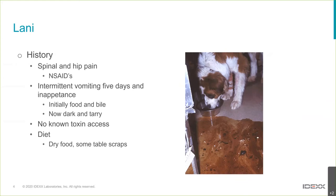Her relevant history was several years of spinal and hip pain managed with non-steroidal anti-inflammatories. The owners would give them as needed and reduce the frequency when she wasn't sore. Her more immediate history was intermittent vomiting over the previous five days and some inappetence, which was very unusual for Lani.